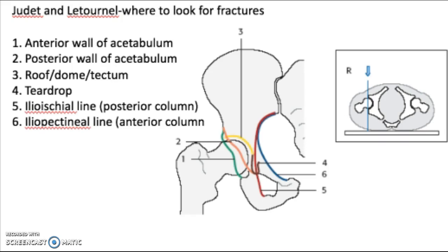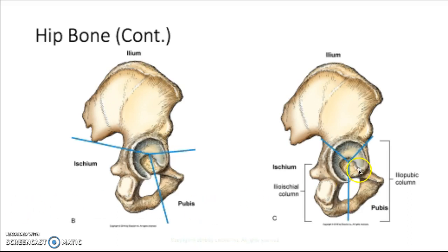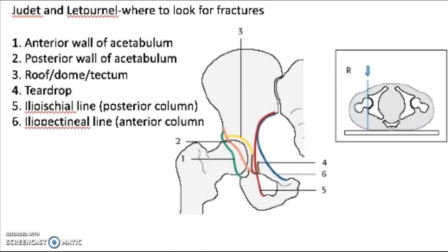The teardrop is something that you can sometimes see and discern and sometimes can't — it's very difficult to find on a lot of images, but sometimes you'll see them pretty well. It's here in this area of the acetabulum. If you're looking anteriorly and you see that little teardrop shape, it's basically that part of the acetabular fossa.